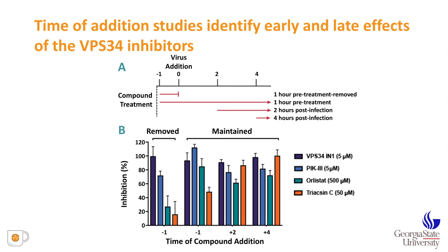Finally, to address where these compounds act in the SARS-CoV-2 replication cycle, we performed time-of-addition studies using the Vero cell Maestro-Z assay. We either added compound one hour prior to infection then removed it before infection, added compound one hour prior and left it on throughout the experiment, or added compound two or four hours post-infection. The two VPS34 inhibitors showed activity even when removed prior to virus addition, but were also active when added late, suggesting they act at early steps proximal to viral entry and at later steps in viral gene expression and genome replication. The fatty acid metabolism inhibitors Orlistat and Triacin-C were not active when removed prior to infection, but were active when added two or four hours post-infection, suggesting they target post-entry steps.